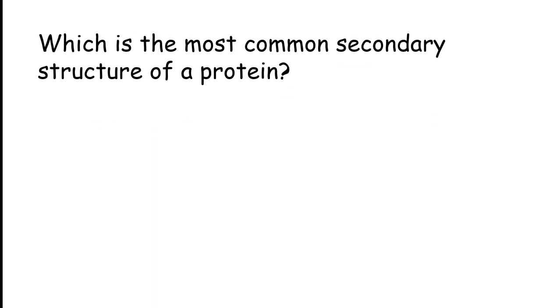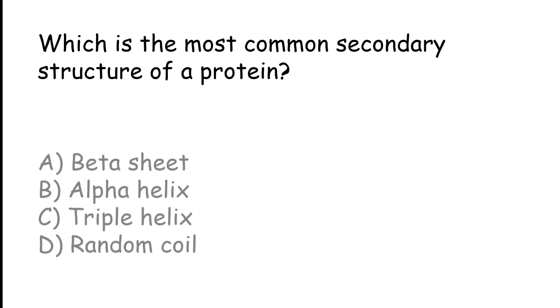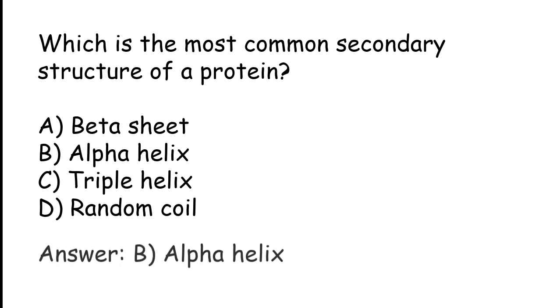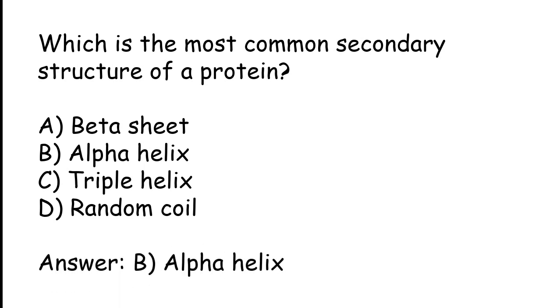Which is the most common secondary structure of a protein? Options: beta sheet, alpha helix, triple helix, random coil. The correct answer is option B: alpha helix.